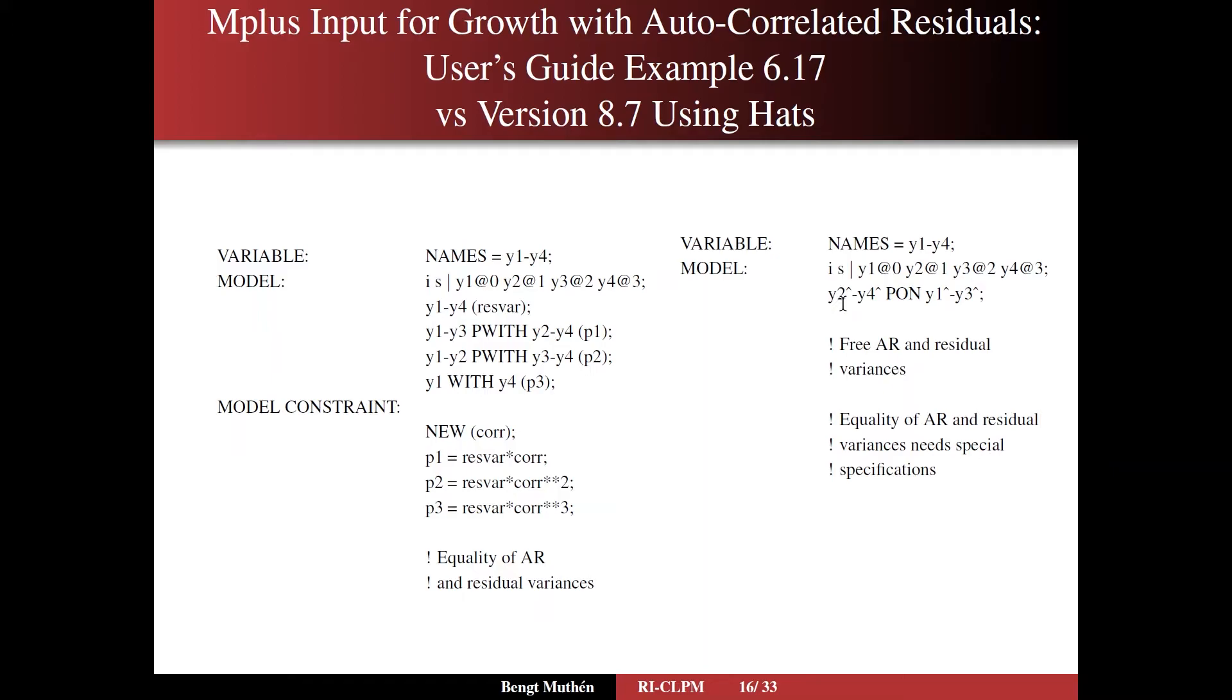refer to the residuals directly as variables. Y2 hat through Y4 hat is pairwise regressed on Y1 through Y3. So 2 on 1, 3 on 2, and 4 on 3. So directly relating the residuals to each other. And in this case,